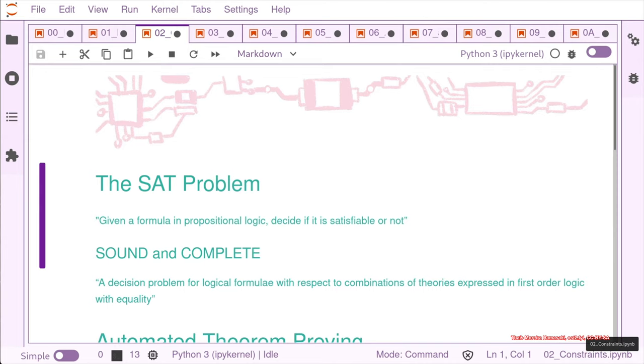So if the SAT problem gives you a solution that is sound and complete, it means that it worked on all possible inputs like we did in the truth table and got the right answer all the time.